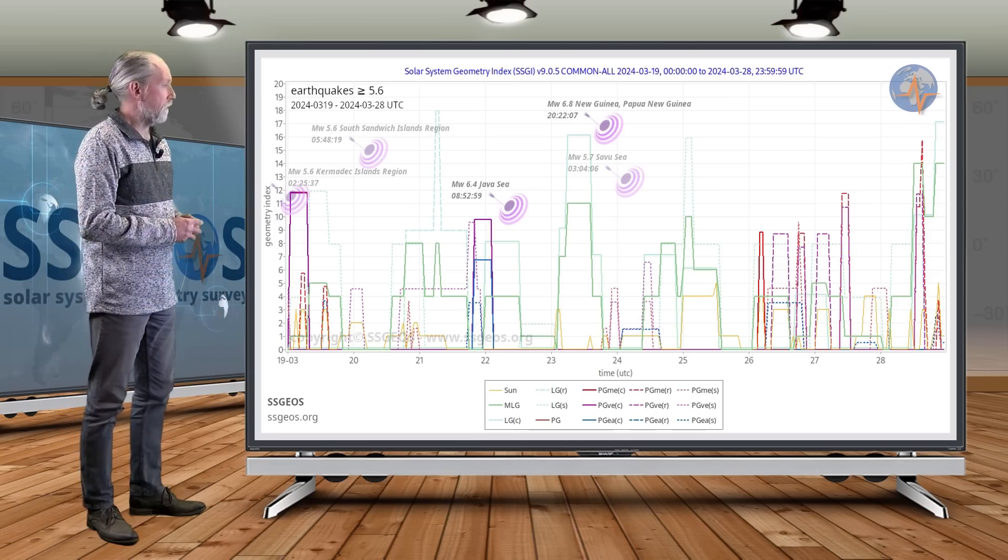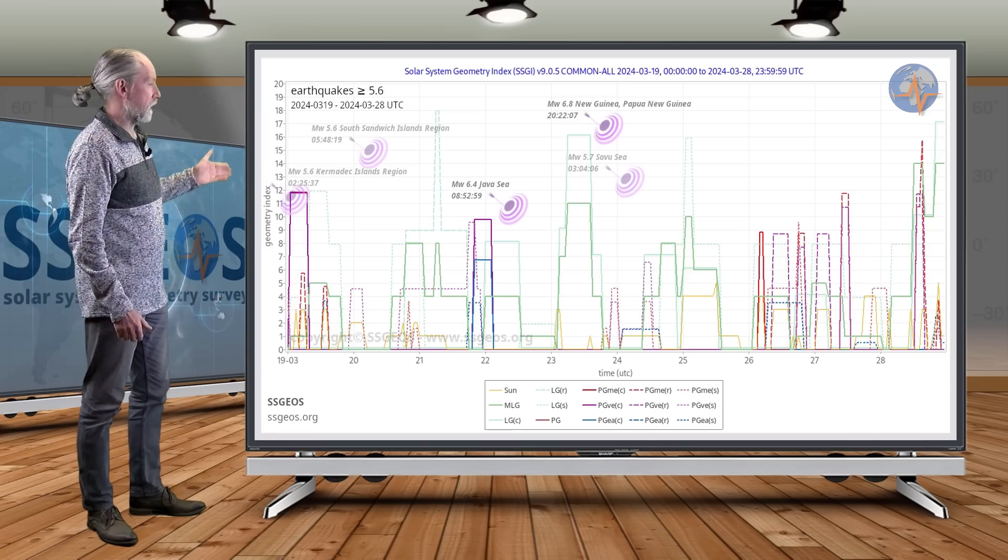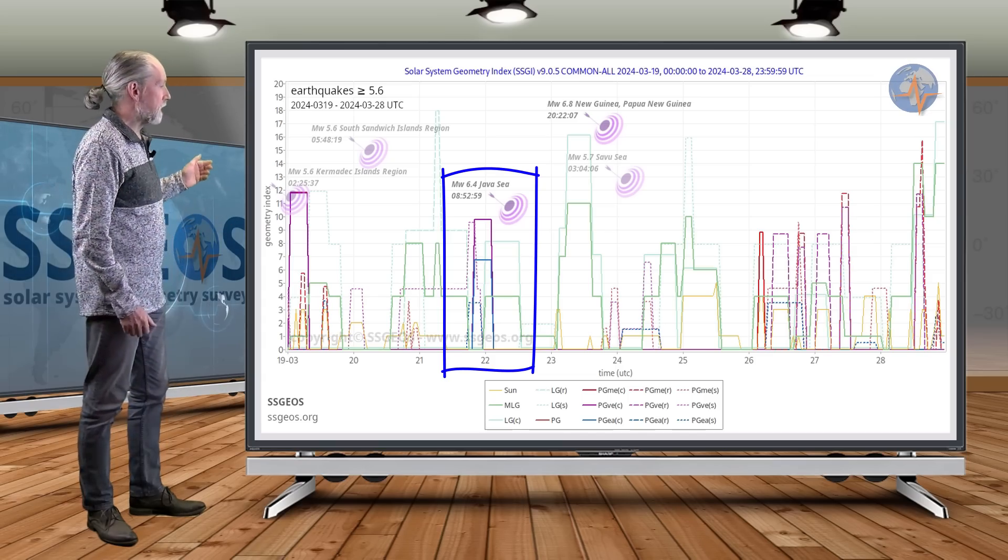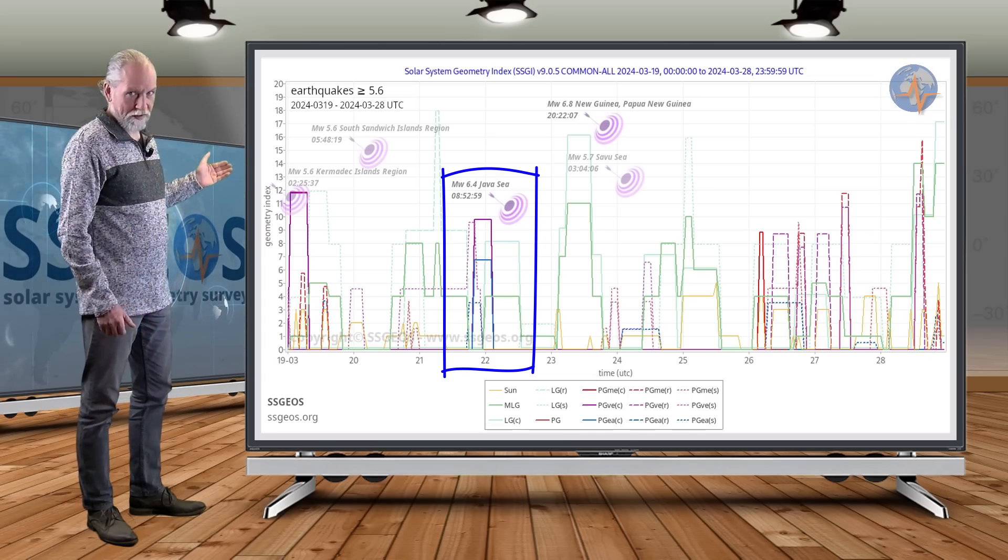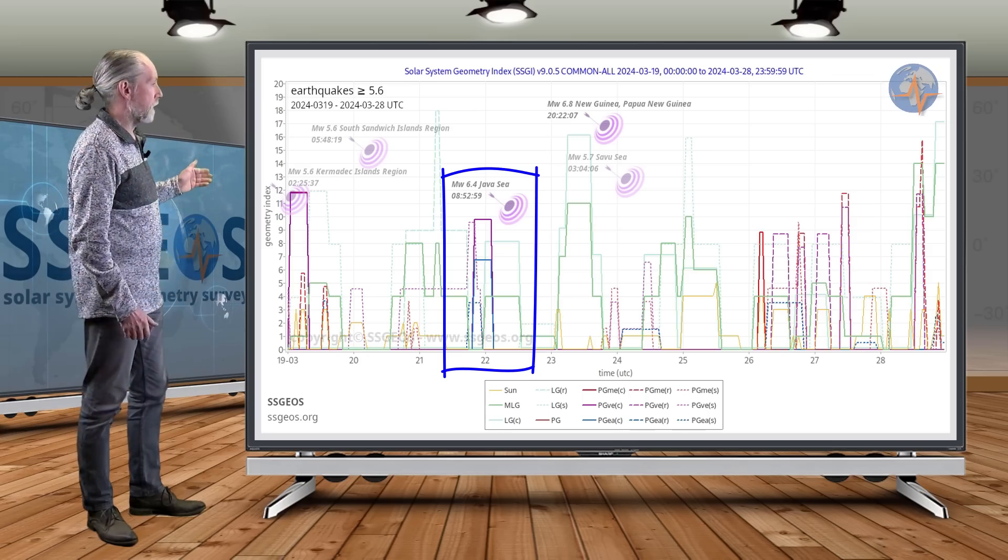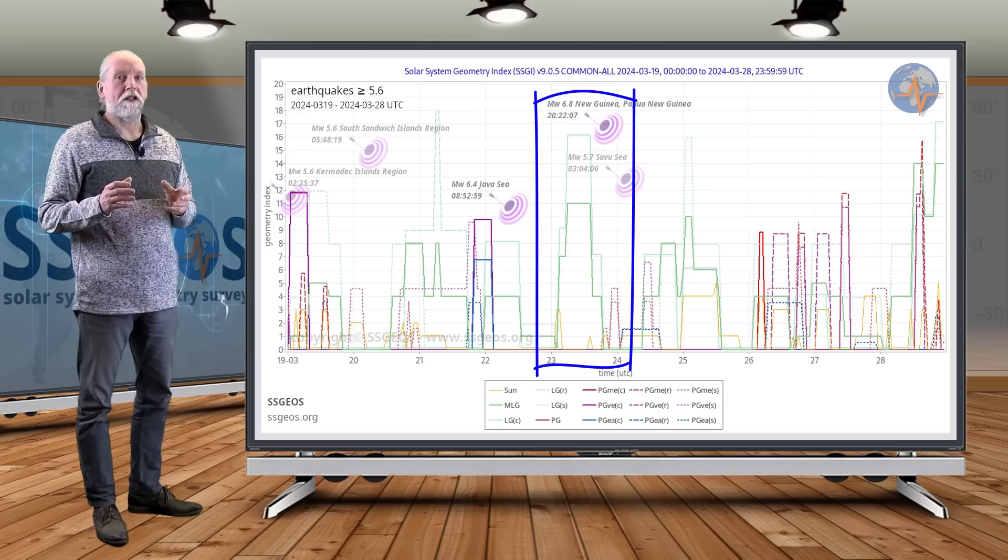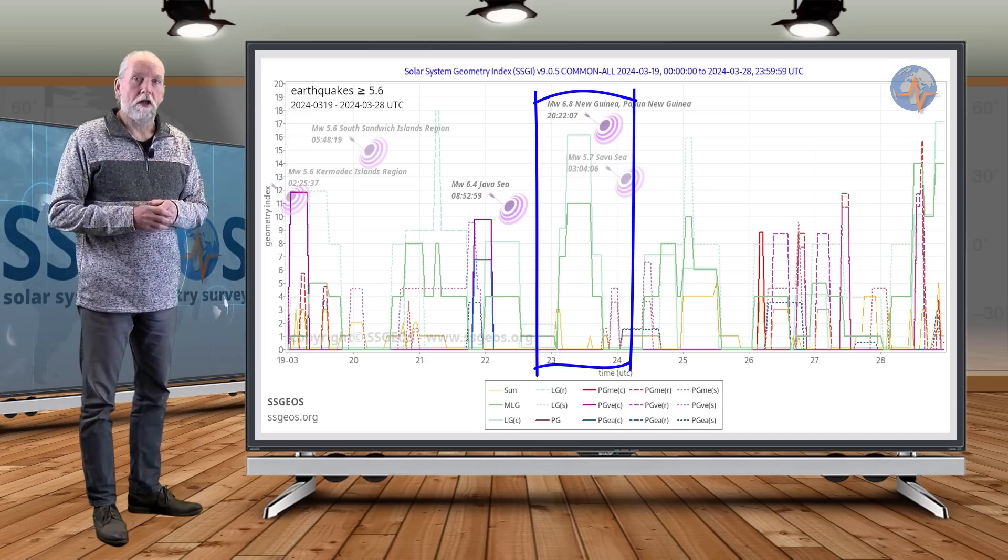As I mentioned in the previous update, we had high lunar peaks, two of which I did not consider critical. But then we had the planetary conjunction of Earth, Venus, and Saturn late on the 21st and early on the 22nd, and that was followed quickly by a 6.4 magnitude earthquake.